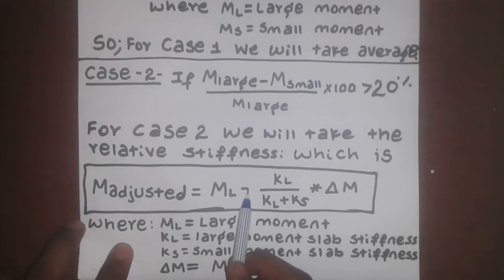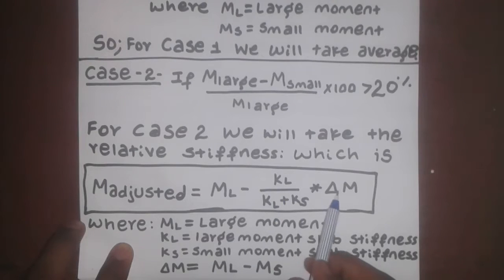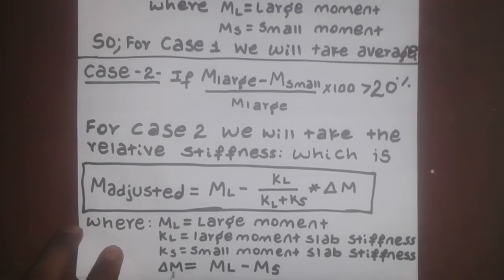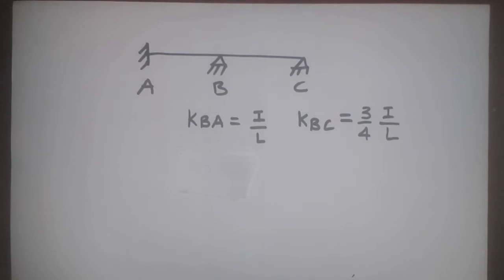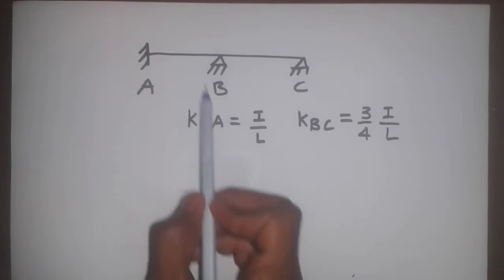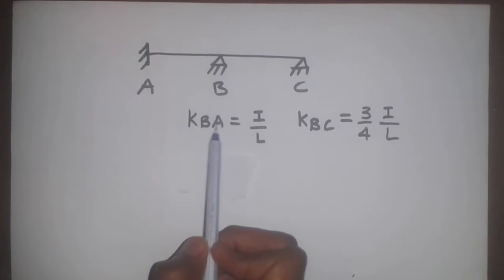ML is the large moment. KL over KL plus KS times the change in M. KL is the slab stiffness of the large moment. KS is the slab stiffness of the small moment. It is the large moment minus the small moment. The stiffness is your main support.